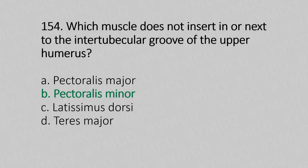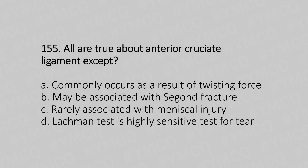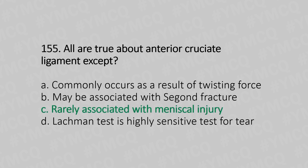Now let's move to question number 155. All are true about anterior cruciate ligament except. Option A: commonly occurs as a result of twisting force. Option B: may be associated with Segond fracture. Option C: rarely associated with meniscal injury. Option D: Lachman's test is a highly sensitive test. And the answer is Option C: rarely associated with meniscal injury.